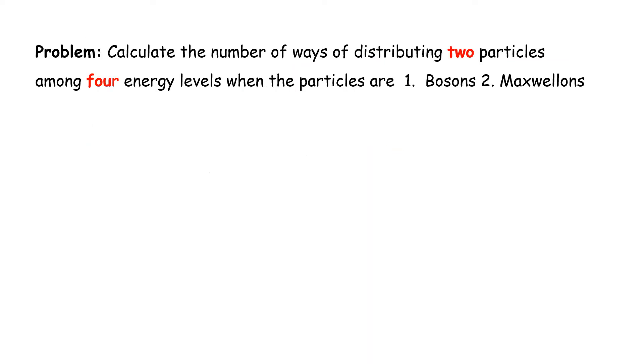Now calculate the number of ways of distributing two particles among four energy levels when the particles are: 1. Bosons and 2. Maxwellons. We solved the Maxwellons formula in the previous video.